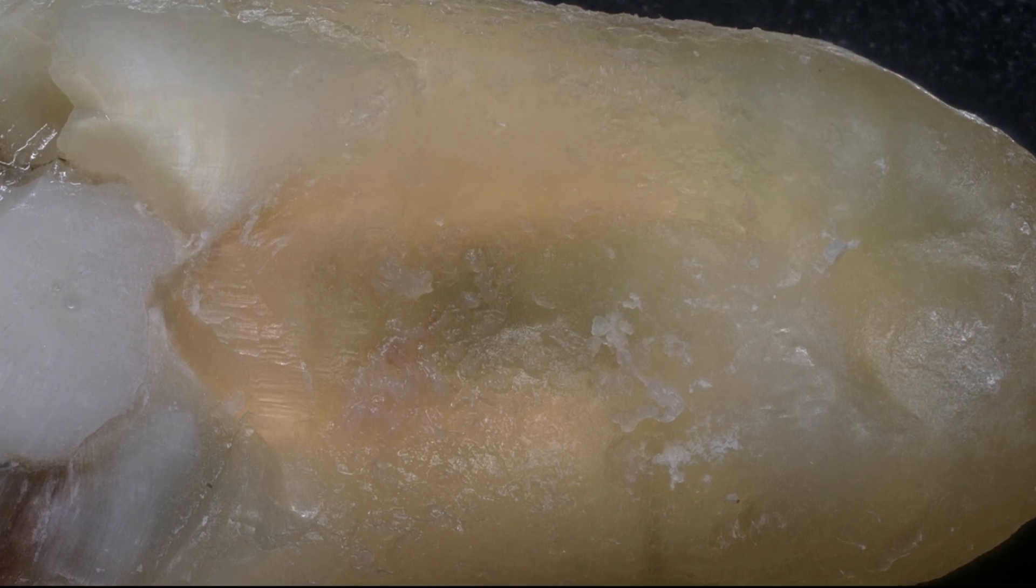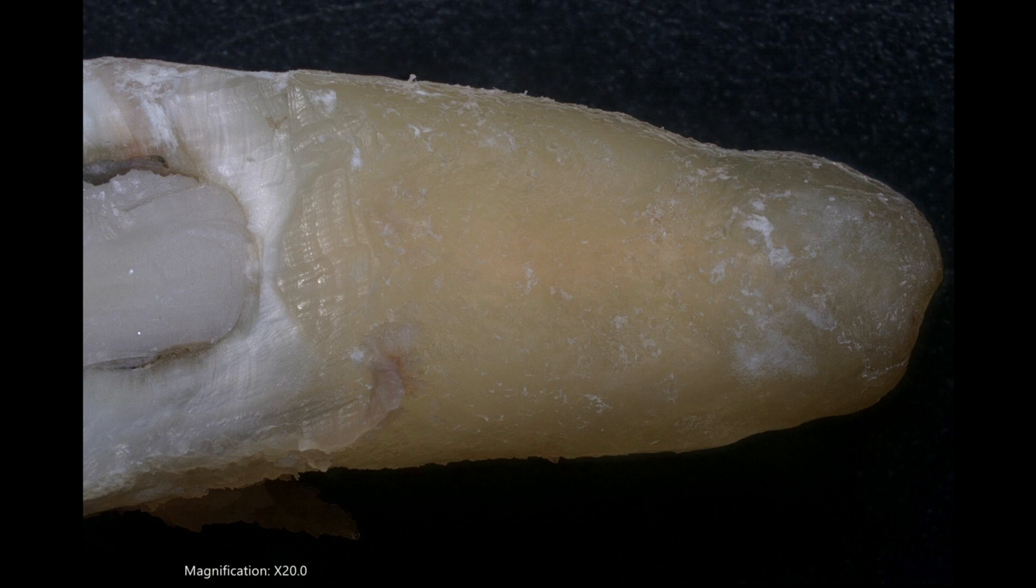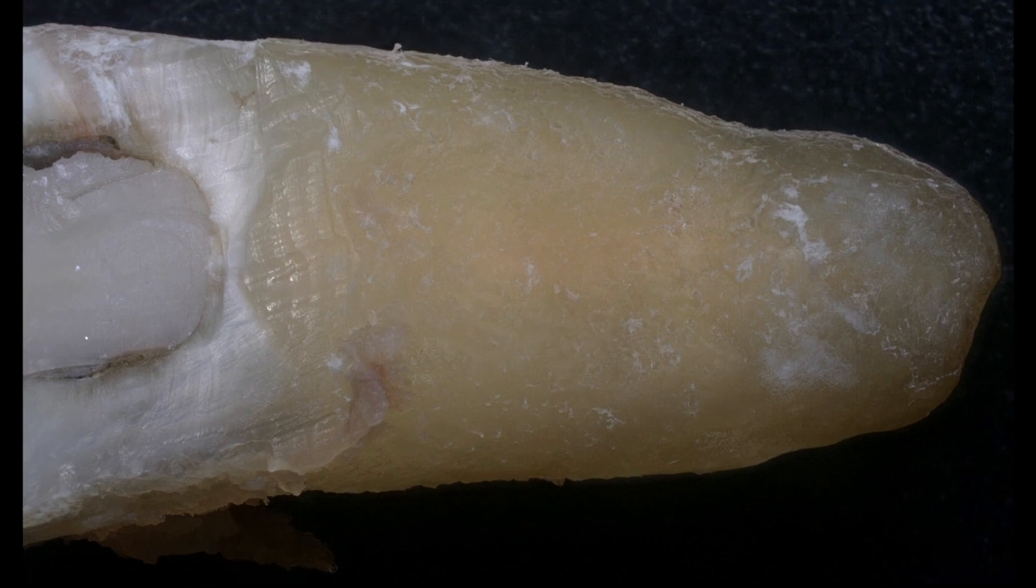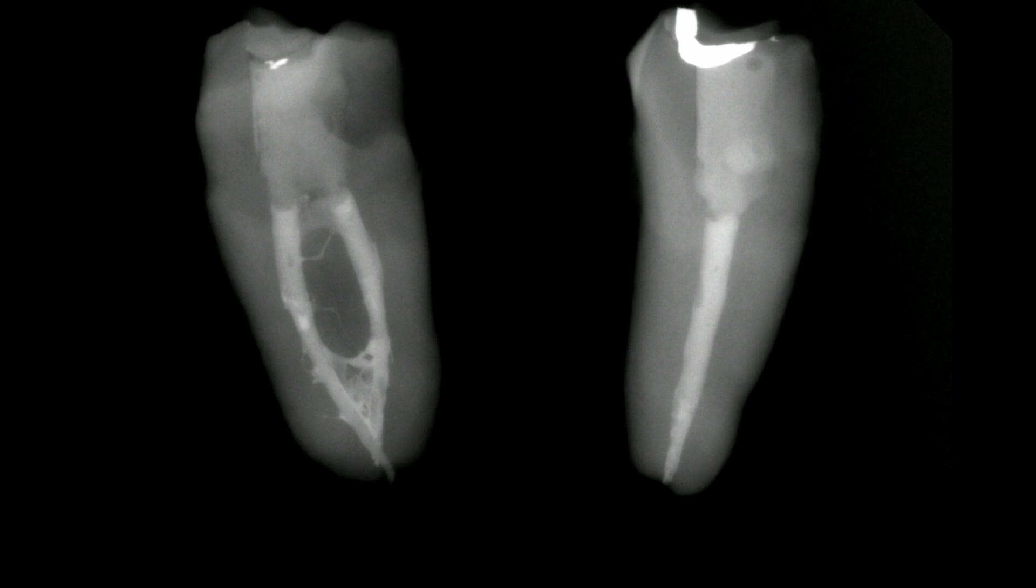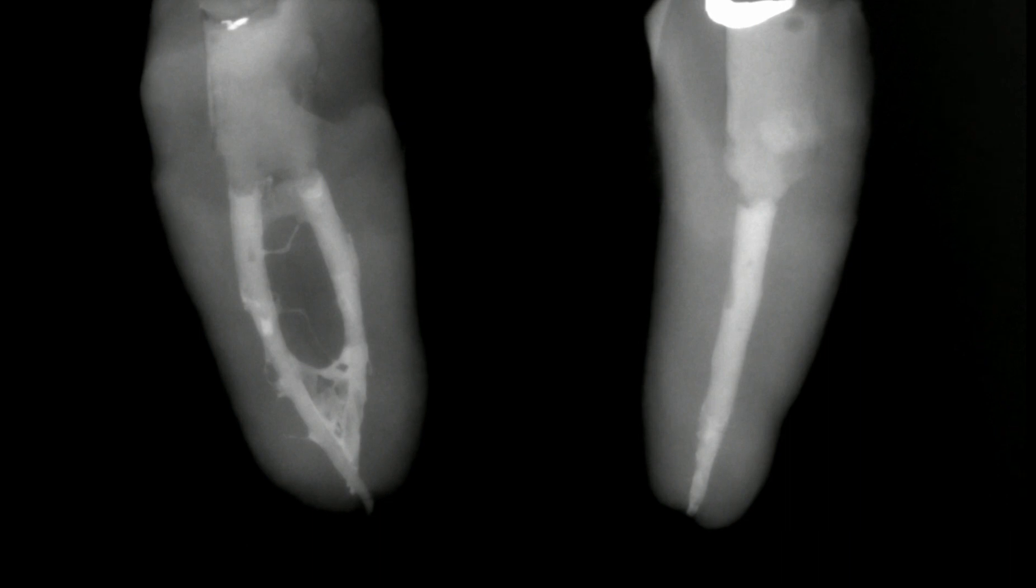These are photographs of the tooth as I got it. That's the mesial root. This is the distal root. And we did a sagittal split on this into two parts. These are the preoperative, my preoperative, pre-assessment radiographs.